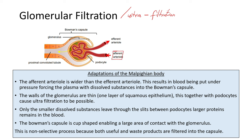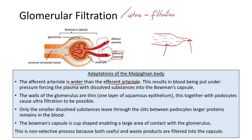The blood that will enter the afferent arteriole will be filtered here, then the waste products will be moving. The first adaptation of the Malpighian body is that the afferent arteriole is wider than the efferent arteriole. Now, remember that when we have something like a hosepipe with water flowing in it and it becomes narrower, the water at the narrower point will be under pressure and will be flowing faster.